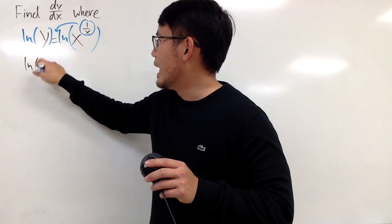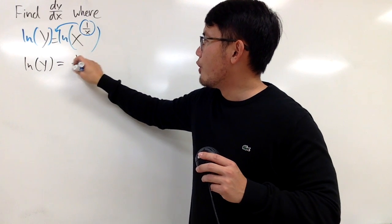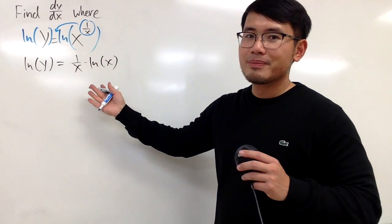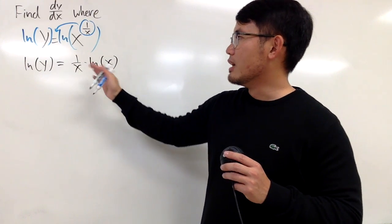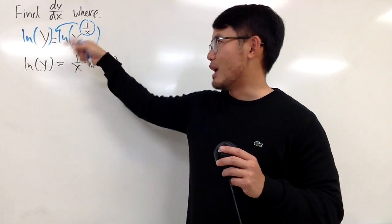We have natural log of y, and that's equal to 1 over x multiplied by ln of x. This is the equation we'll differentiate rather than the original one.